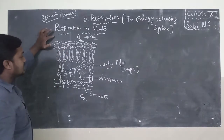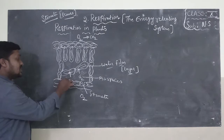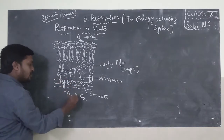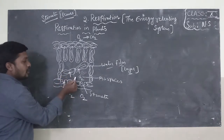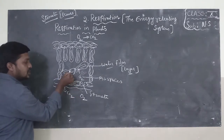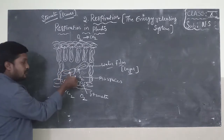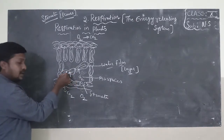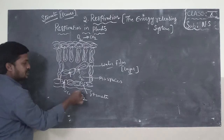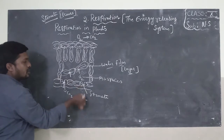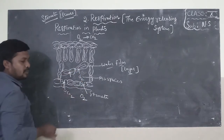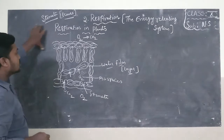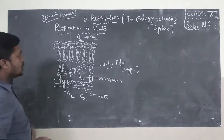Simultaneously, CO2 also comes outside. When oxygen diffuses into the cells, the CO2 gets diffused into the air spaces and comes out through the stomata. So oxygen enters into the cells and CO2 comes outside through the stomata. This is called respiration in plants.